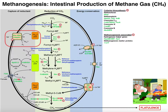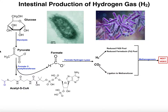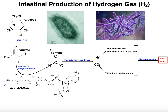In the previous couple of videos, we actually saw how bacteria in the small and large intestines of humans and other animals are actually able to generate hydrogen gas, and those same bacteria are going to be able to use that hydrogen gas to perform methanogenesis, which is the process of generating methane, ultimately from carbon dioxide or CO2.